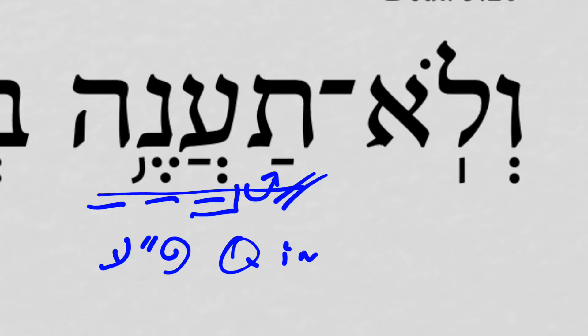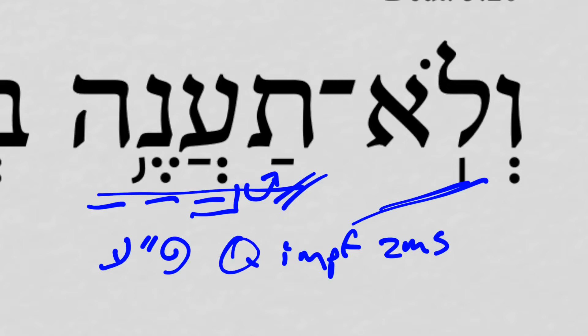So this is a qal imperfect, 2nd masculine singular, and has the strong negative — and you shall not answer.